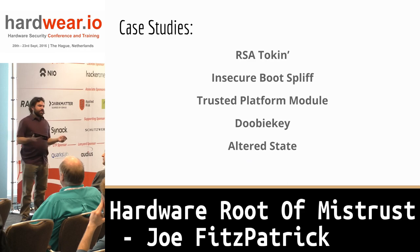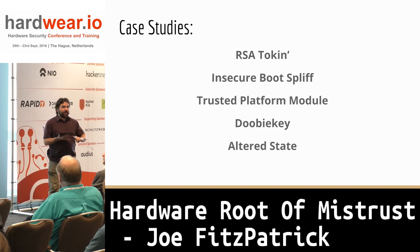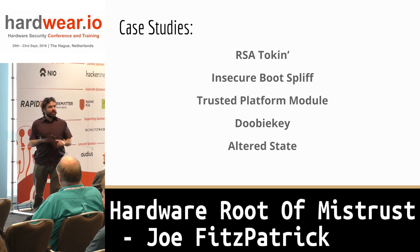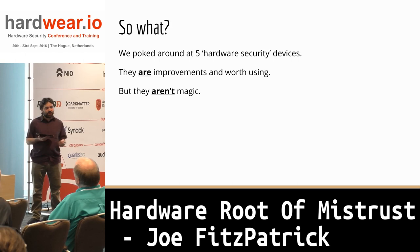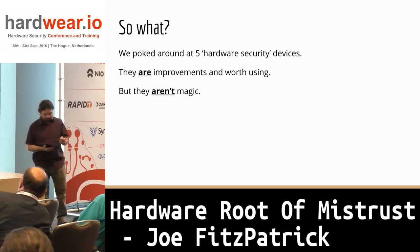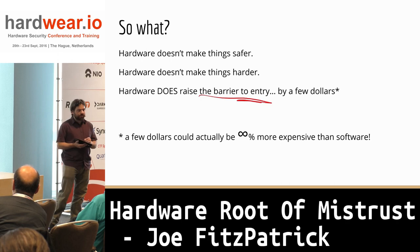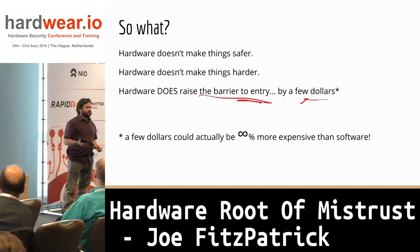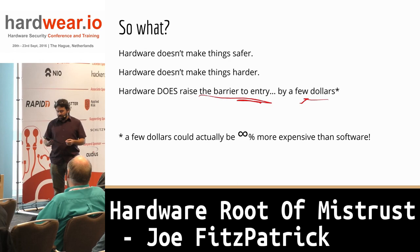That is the altered state machine. Basically, we have all these scenarios where, one by one, hardware security devices are used to improve the security of our software — because we think we can trust immutable hardware a little bit more than software. However, if Mike and I in our free time can go and undermine all of these things, imagine what a funded person would be able to do. Every single one of them is an improvement to a purely software security process. But they aren't magic. Hardware doesn't make things safer and doesn't necessarily make things harder, but what it does do is raise the barrier to entry by a few dollars.